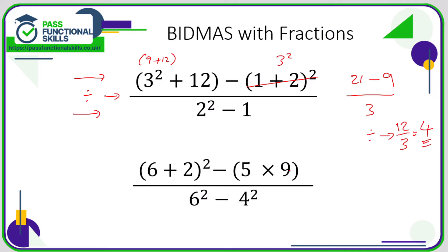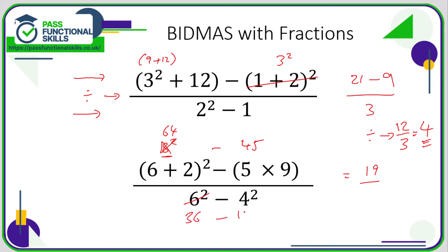Let's look at the next one. On the top line, six plus two — we've got brackets — is eight, so we've now got eight squared. Then we have more brackets: five times nine is 45. Doing the indices next, eight squared is 64. So on the top we have 64 take away 45, which is 19. On the bottom, we have six squared — 36 — take away four squared — 16 — so 36 minus 16 is 20.